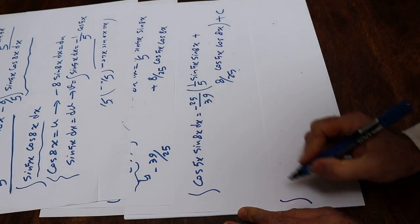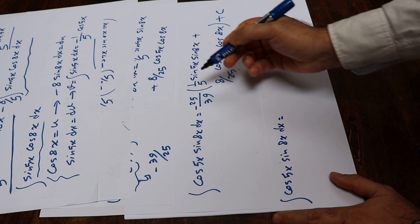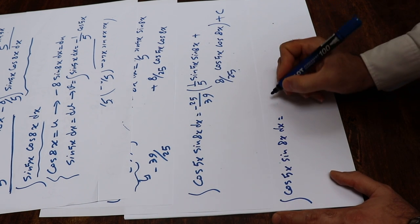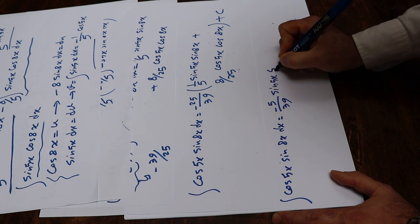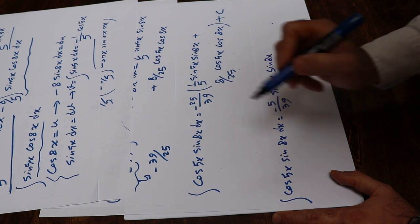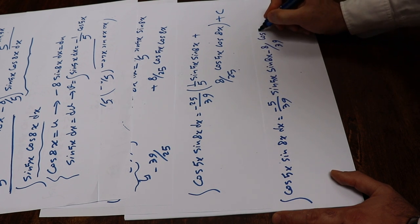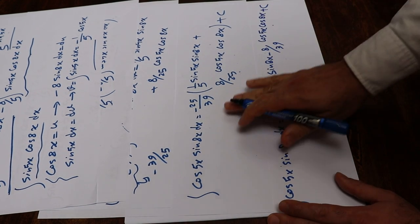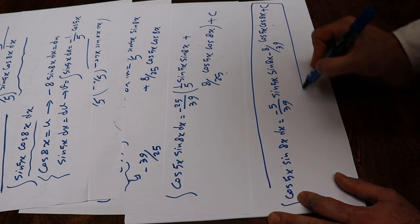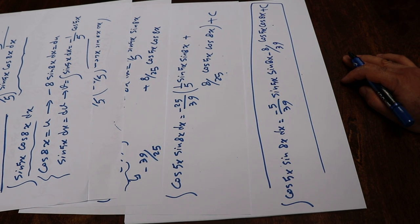Therefore you can write this integral of cosine 5x sine 8x dx equals minus 5 divided by 39 sine 5x sine 8x, minus 8 divided by 39 times cosine 5x cosine 8x, plus c, which is the constant of integration. And that is the solution to our integral. I hope you found this video helpful. Please feel free to subscribe to this channel so you can be updated when I upload new videos. Thank you.